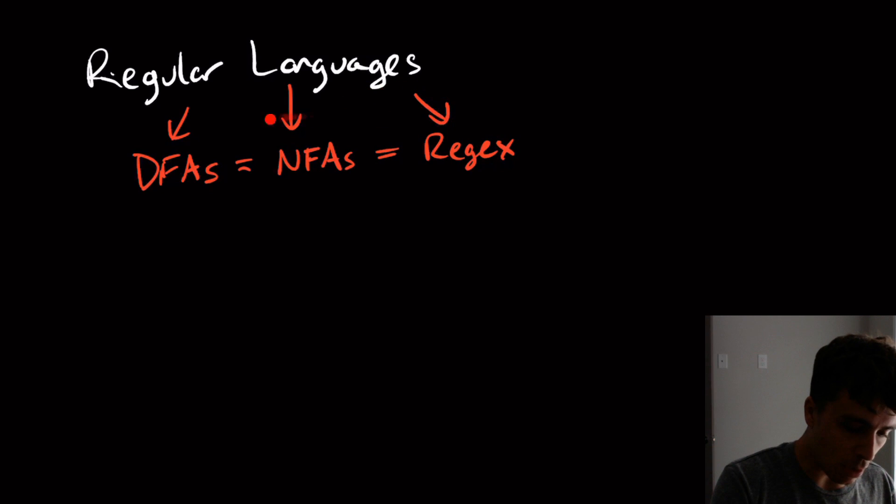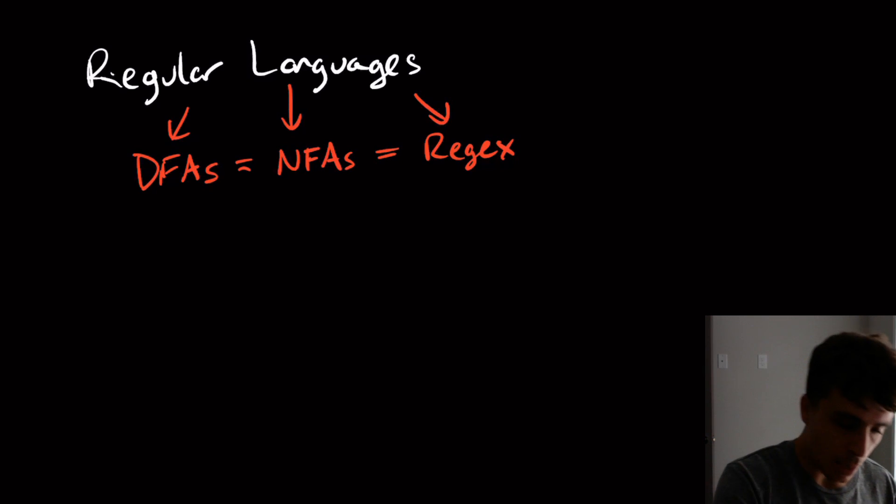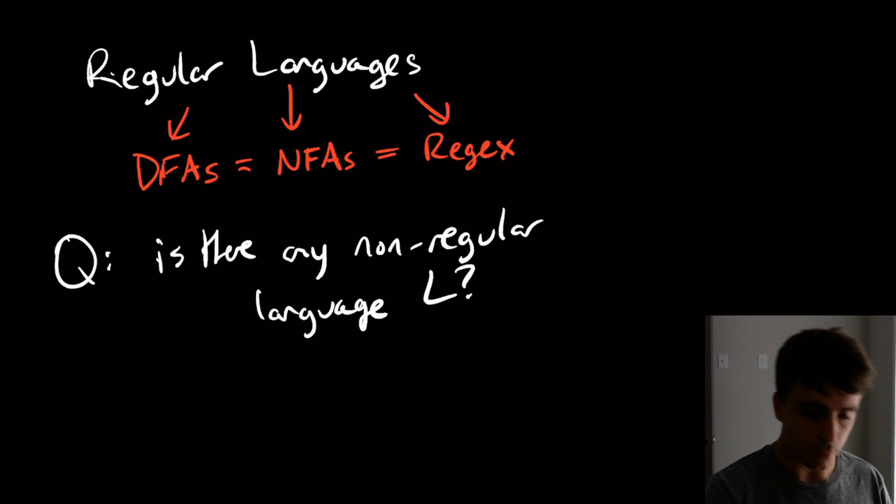So then you may be thinking, okay, well, every single model that we've ever talked about is the same. There's no model that's more powerful than what we've seen. So what we may want to ask then is, is there any non-regular language L? So is there any non-regular language L? Well, if there is one, then there's obviously no DFA, no NFA, and no regex for it.